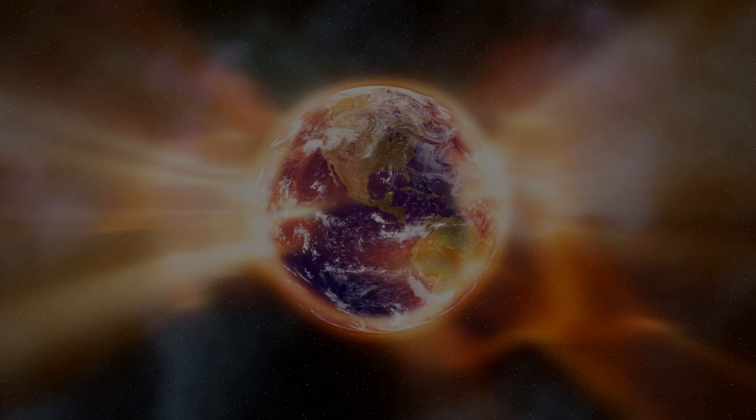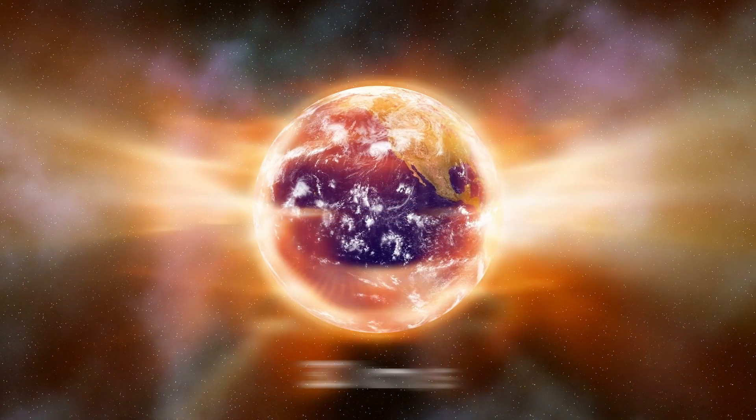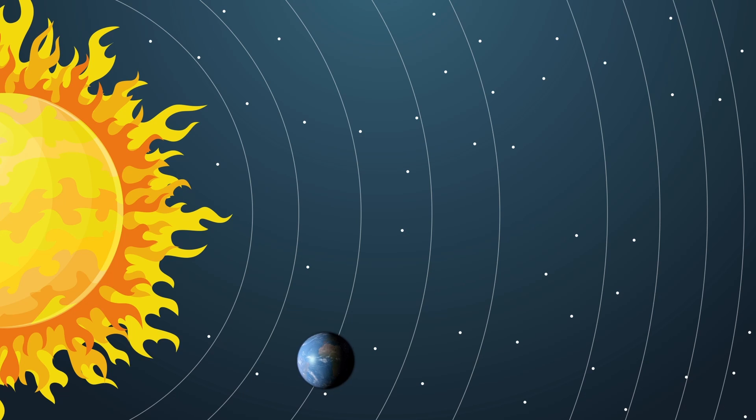If the Sun were to suddenly vanish into thin air, Earth would continue to cannonball into the cosmos at 30 kilometers per second. Conversely, if the Earth's orbital velocity heightened, it would adjust to a higher orbit to counterbalance the Sun's gravitational tug.